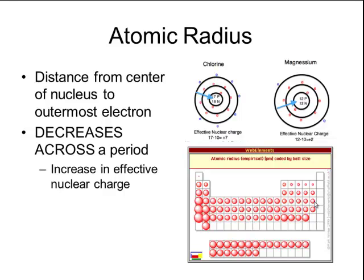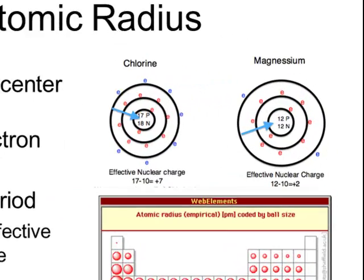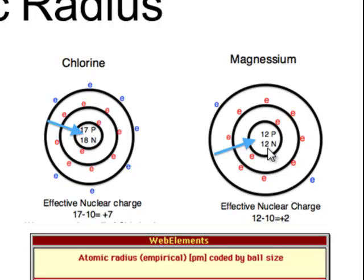The effective nuclear charge is the charge that the electrons feel from the pull of the nucleus. If you look at an atom of magnesium, the nucleus has 12 protons and 12 neutrons, giving a charge of positive 12. The electrons are arranged in different energy levels — 1, 2, and 3. The inner electrons screen the outer electrons from the nucleus's charge, like a shield. So there are 10 inner electrons that shield the two outside electrons, and those outside electrons only feel a charge of 2.